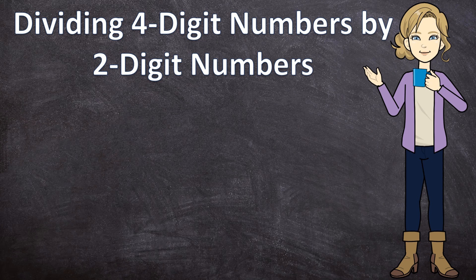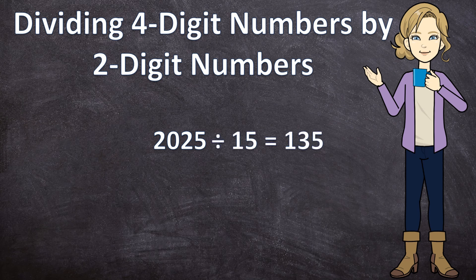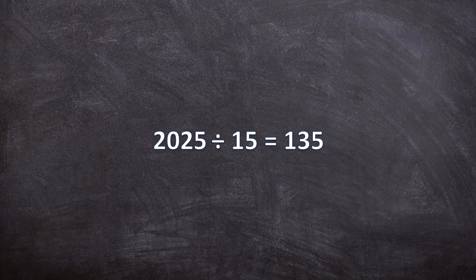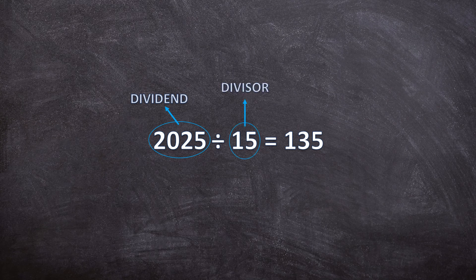But before we get started, let's just recap our terminology. We have this example: 2025 divided by 15 is equal to 135. The 2025, the number we will be dividing, is called the dividend. The number we will be dividing with, in this case the 15, is called the divisor. And the answer is called the quotient.